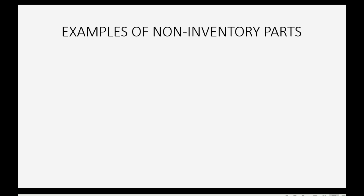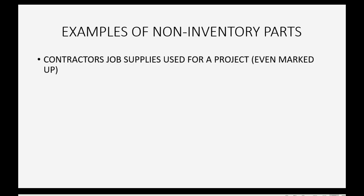Some examples of non-inventory parts would be contractors who use job supplies, even if they buy them and mark them up. They don't really count the supplies and keep an inventory — like the bricks they would use to repair a wall, or the wooden beams that they use to build a wall, and so on.